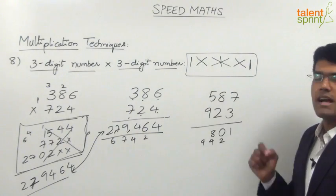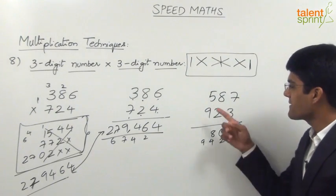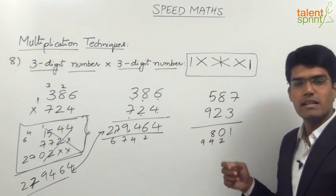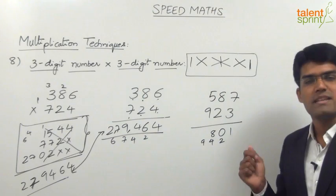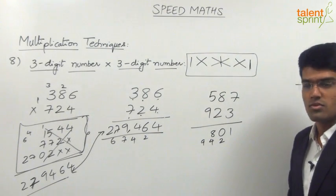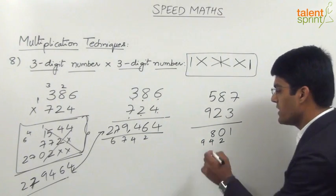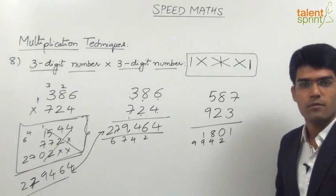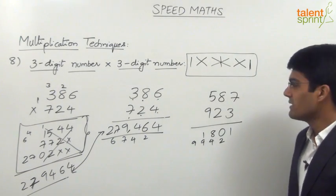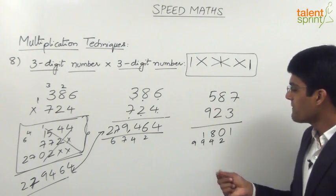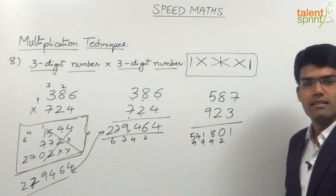The fourth step is cross multiplication of tens places with hundreds places: 5 multiplied with 2, and 8 multiplied with 9. 5 into 2 is 10, 8 into 9 is 72; 10 plus 72 is 82, plus carry 9 is 91. Take 1 in the answer and carry 9. The last step is multiplication of hundreds places: 5 into 9 is 45, plus carry 9 gives 54.